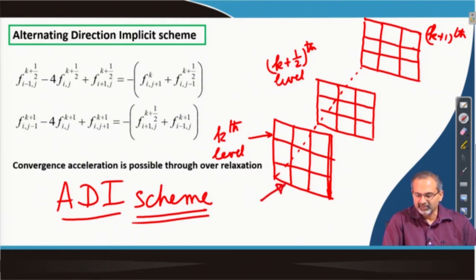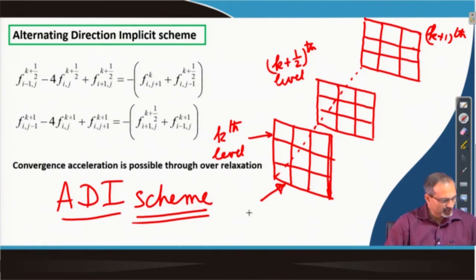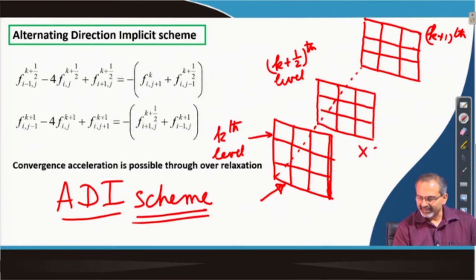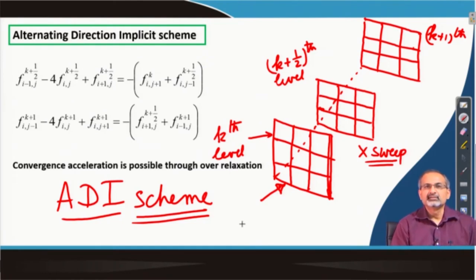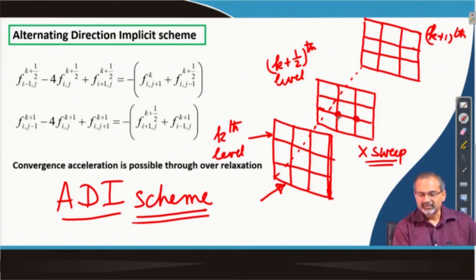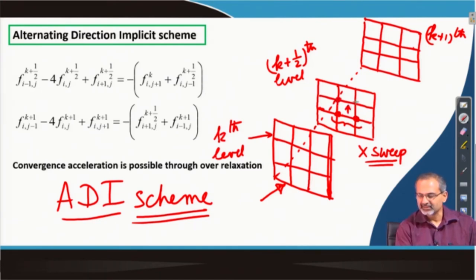The solution is already available at the kth level — that is the assumption. Once that is available, what you first do at the k+1/2 level is what is called an x sweep. What do we mean by an x sweep? Like we were talking about the line-by-line solution of the system of equations, here we just take the grid points row-wise. In a given row, you would take those grid points and solve for their values. Once you solve them, you move up and solve for the next row, and so on.